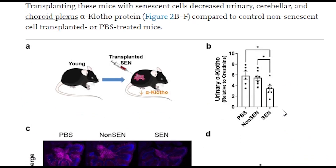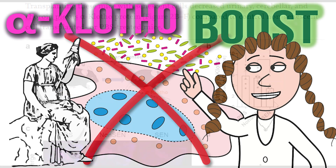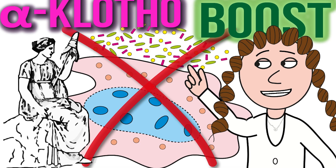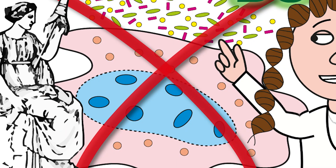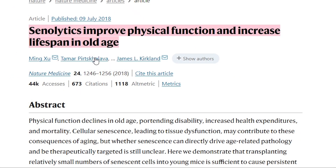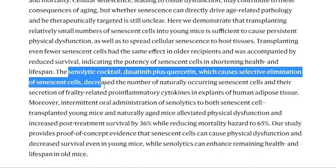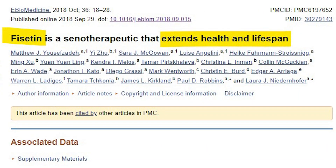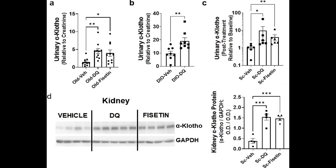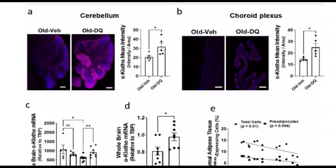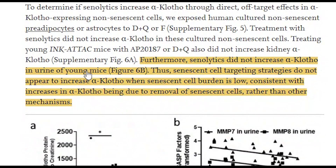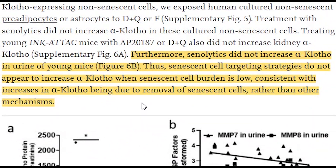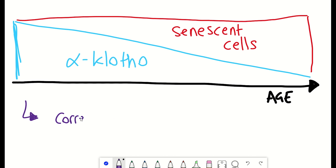But targeting the SASP is just one mechanism. Why not just get rid of the senescent cells and see what happens? This is what they did. They used so-called senolytics — drugs that selectively kill senescent cells — specifically the already reported combination of dasatinib and quercetin, as well as fisetin, and they detected increased alpha-clotho in the urine and kidney in aged mice. It's worth noting that senolytics didn't increase alpha-clotho in young mice, most likely because senescent cell levels are low in young mice, so clearing them has a minimal impact. This supports the idea that senescent cells may be the cause of the reductions in alpha-clotho with age.